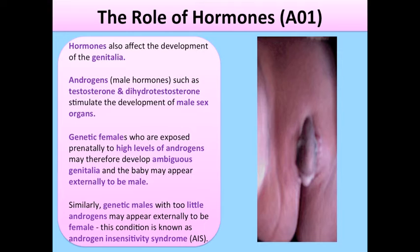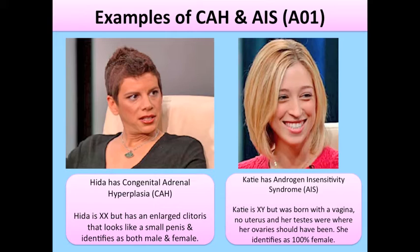Androgens — male hormones such as testosterone — stimulate the development of male sex organs. Genetic females who are exposed prenatally to high levels of androgens may therefore develop ambiguous genitalia and appear externally to be male. Similarly, genetic males with too little androgens may appear externally to be female. This condition is known as androgen insensitivity syndrome, or AIS.